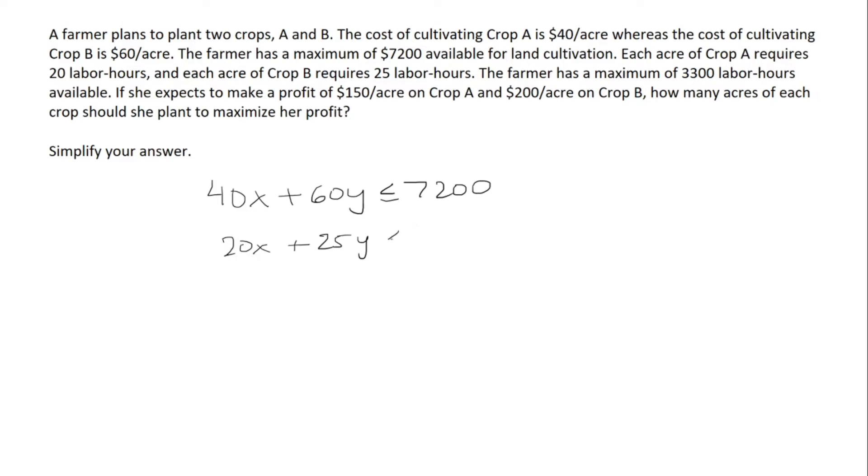The farmer has a maximum of 3,300 labor hours so cannot exceed 3,300. If she expects to make a profit of $150 an acre on Crop A and $200 per acre on Crop B, how many acres of each crop should she plant to maximize her profit?